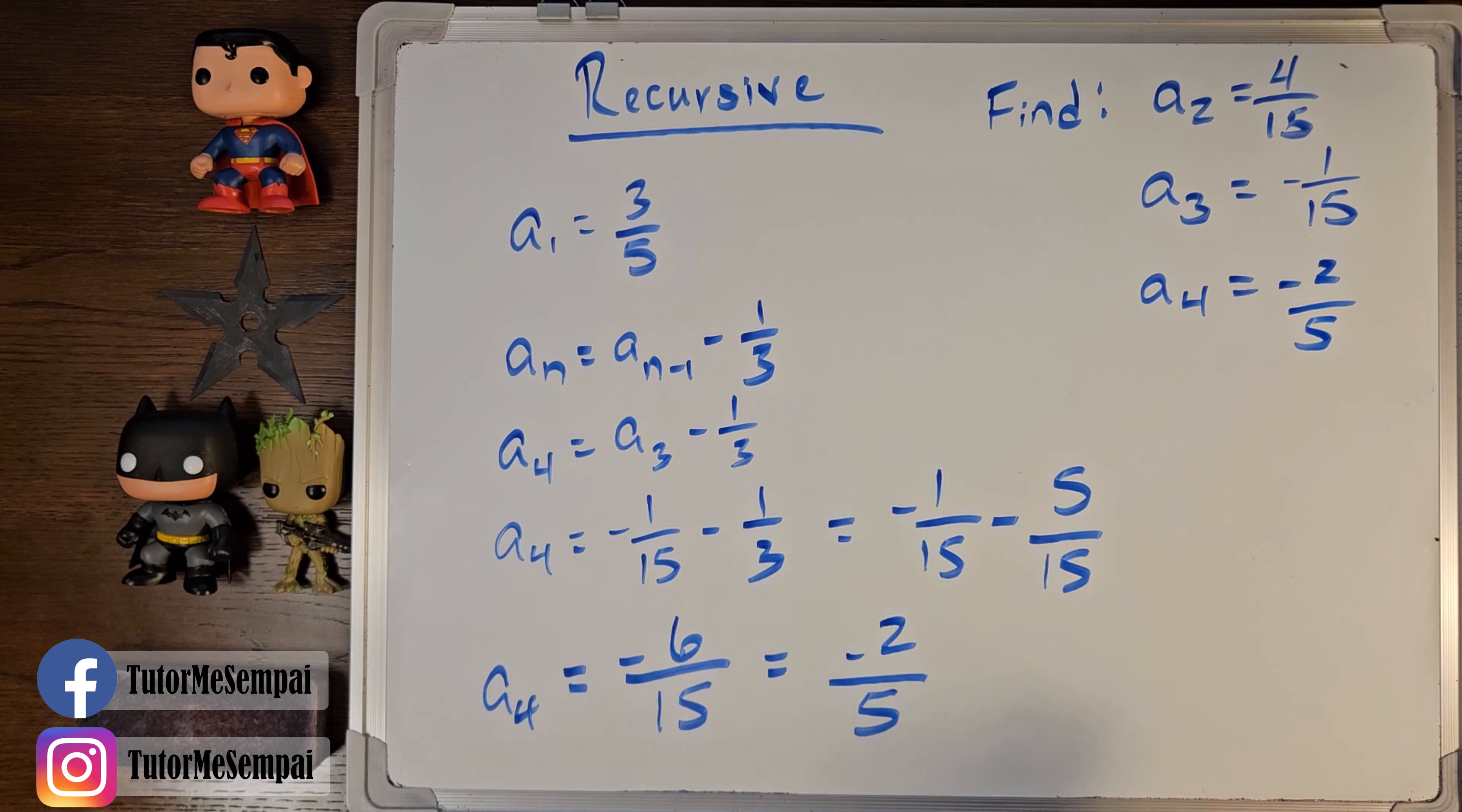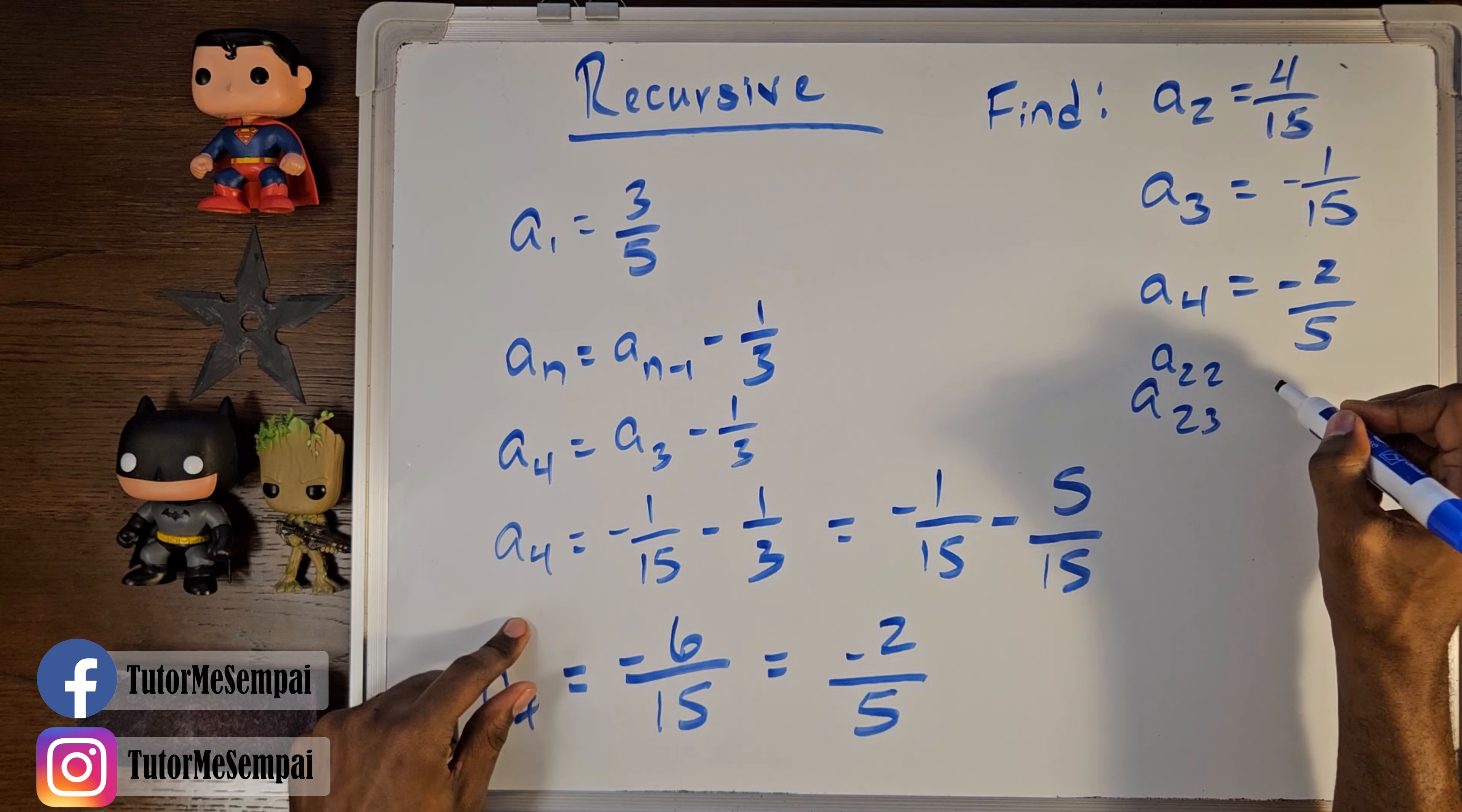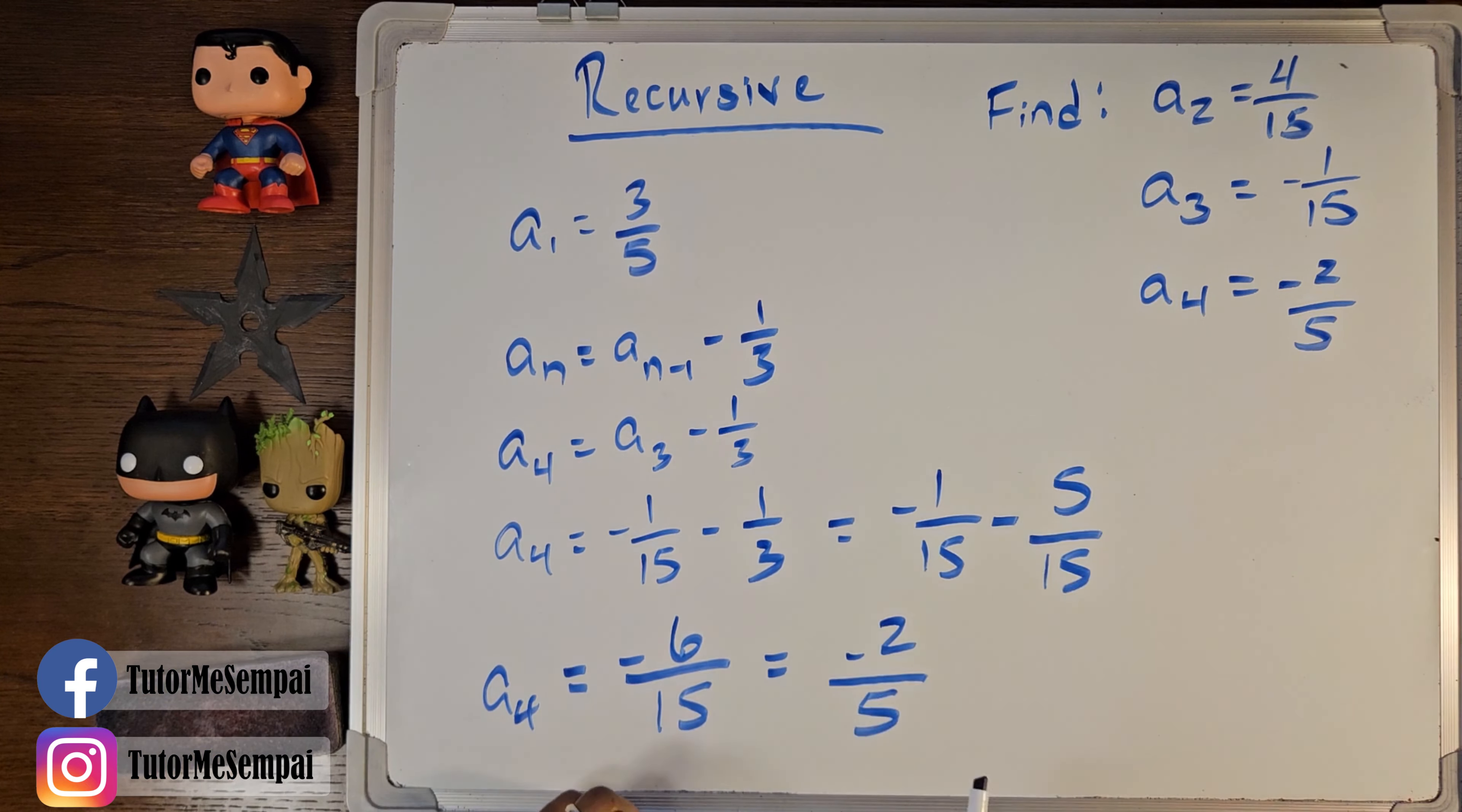Now, notice we don't have some arbitrary term out there like we did for our explicit. This is on purpose because a recursive really depends on knowing what you previously found. So, if you want to do like an a sub 23 again, we would need to find our a sub 22. And that would need to find an a sub 21 and then keep going back. So, we're going to have to pretty much build up the entire sequence to get to this arbitrary value here. But, if we want to find a few couple terms like we just did, this is more than enough.